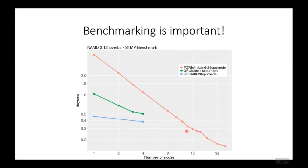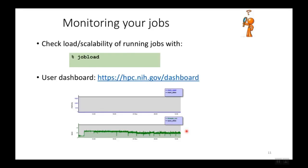There is a good description of how to calculate the efficiency of a parallel job on one of our documentation pages, with the URL provided later. The key takeaway is to benchmark your job, since these results are valid for this particular large MD system and its parameters. Different simulation techniques, programs, and systems have different performance profiles, so benchmarking for your specific simulations before launching production runs is essential. You can check the load of your running jobs with the jobload command or your user dashboard, explained in other videos in this course.